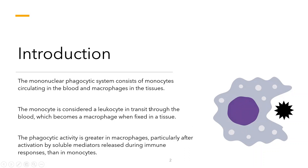The cells in this group include monocytes, which are phagocytic cells normally found in circulation, and macrophages, which are found fixed in tissues. Monocytes are considered white blood cells in transit through the blood that ultimately become macrophages when fixed in a tissue. As monocytes move into tissues, they actually become macrophages, so we need to know that distinction.